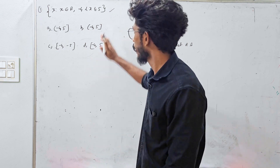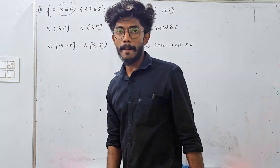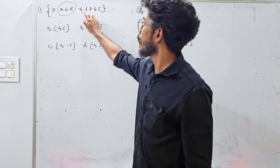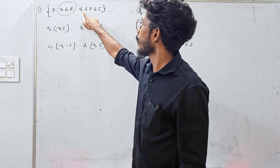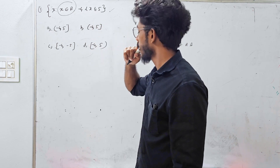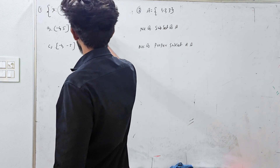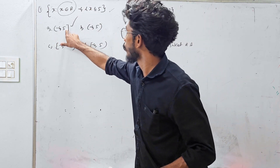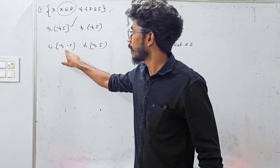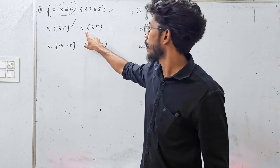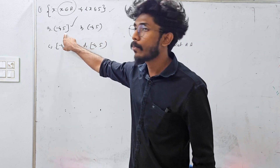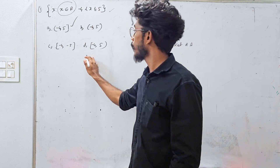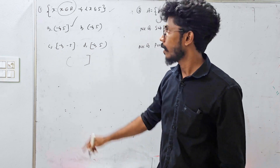There is no correct answer. X belongs to R, real number. It means that minus 4 is less than or equal to x, which is less than or equal to 5 — all values. So 5 is included. Included means closed bracket. This is the optional answer.